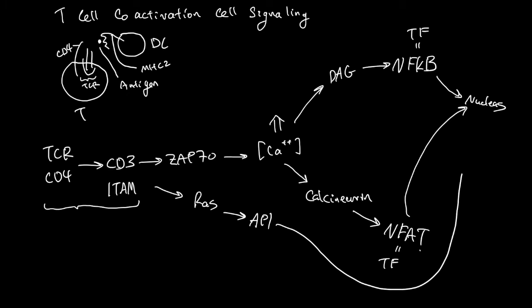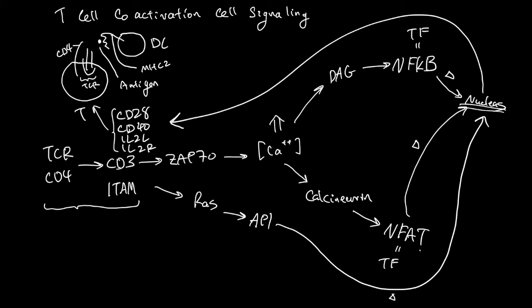NF kappa B, NFAT, and RAS AP1 pathways change gene expression, resulting in production of CD28, CD40, IL2 ligand, and IL2 receptor by the T-cell. Anti-inflammatory drugs like glucocorticoid inhibit calcineurin activity and RAS pathway.